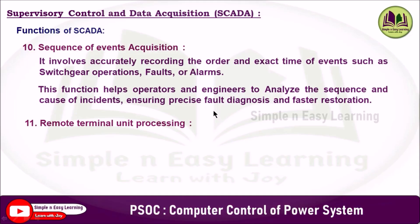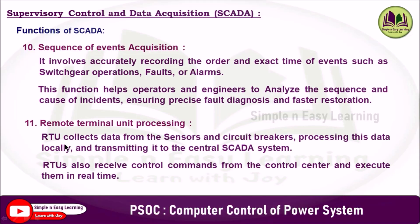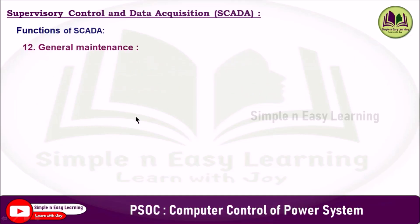The eleventh function is remote terminal unit processing. The RTU collects data from sensors and circuit breakers, processes this data locally, and transmits it to the central SCADA system. The RTU also receives control commands from the energy control center and executes them in real time, enabling efficient monitoring and control of remote equipment, reducing communication delays and enhancing overall responsiveness and reliability of the power system.